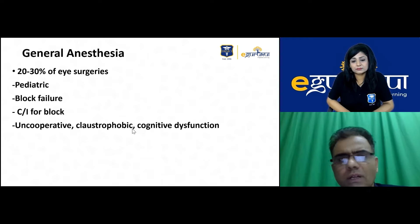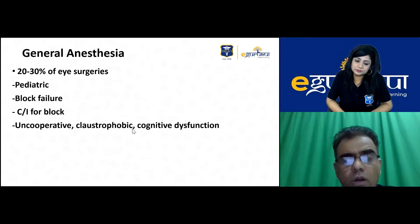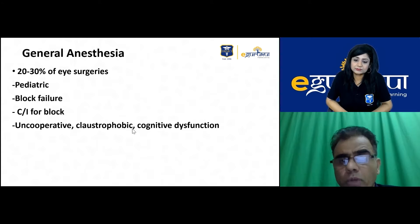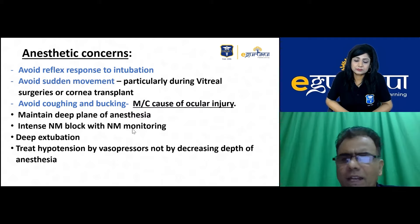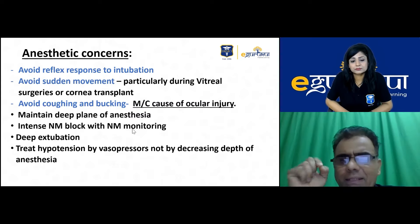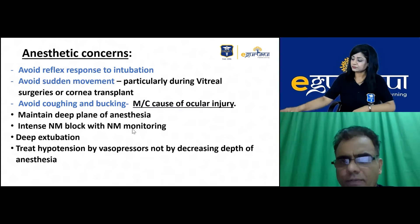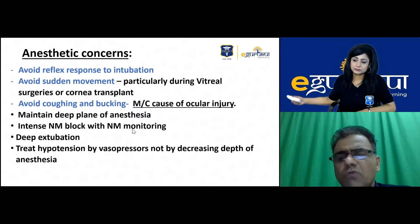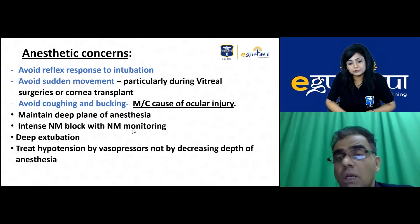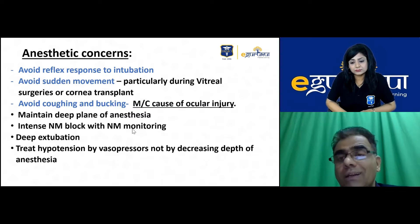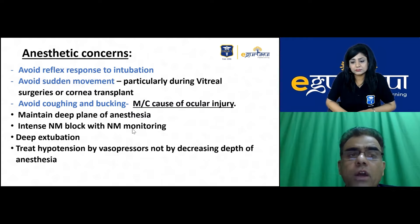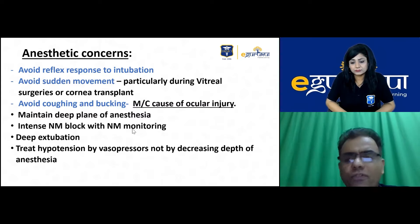General anesthesia is needed for the remaining 20% of surgeries — particularly pediatric patients, block failure, contraindications to block, uncooperative or claustrophobic patients, or those with delirium or dementia. Important anesthetic concerns for ocular GA: intubation is one of the strongest sympathetic responses — it can cause tachycardia, hypertension, and a tremendous rise in intraocular pressure. Everything must be done to block these reflex responses.